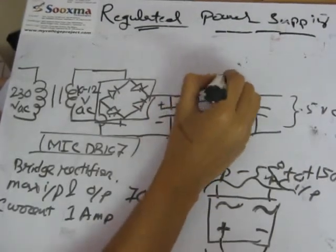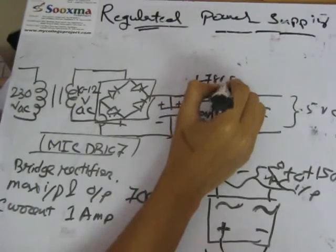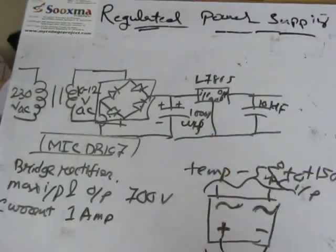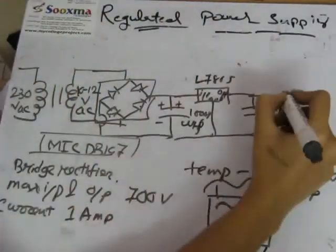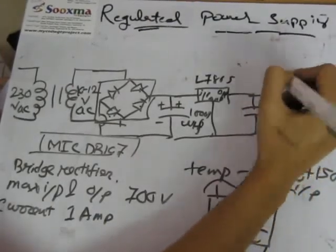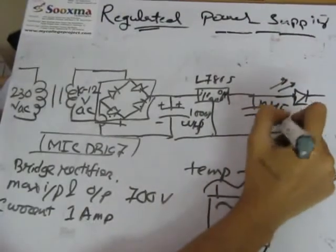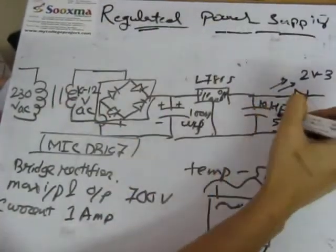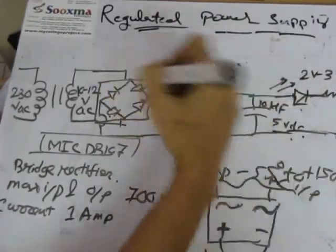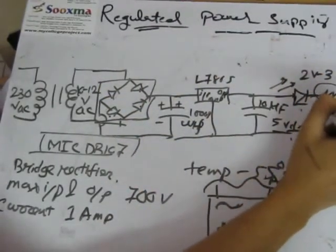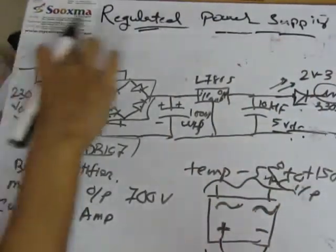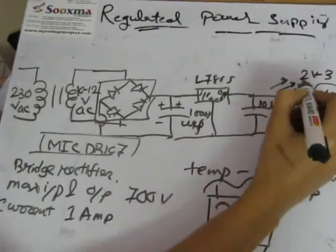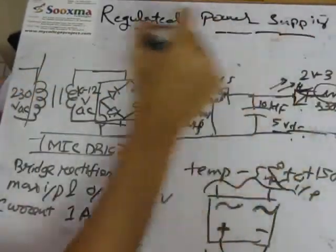This is the L7805 IC — the input pin, the middle pin is ground, and the output pin. After the output we place a 10 microfarad capacitor. Now, to verify that our regulated power supply is working properly, we can place an LED. Since the output voltage is 5 volts DC but the LED requires only 2 to 3 volts DC, we have to drop the remaining voltage, so we place a 330 ohm resistor. If the entire regulated power supply unit — from transformer to capacitor — is working properly, then only this LED will glow, confirming that the unit is working correctly.